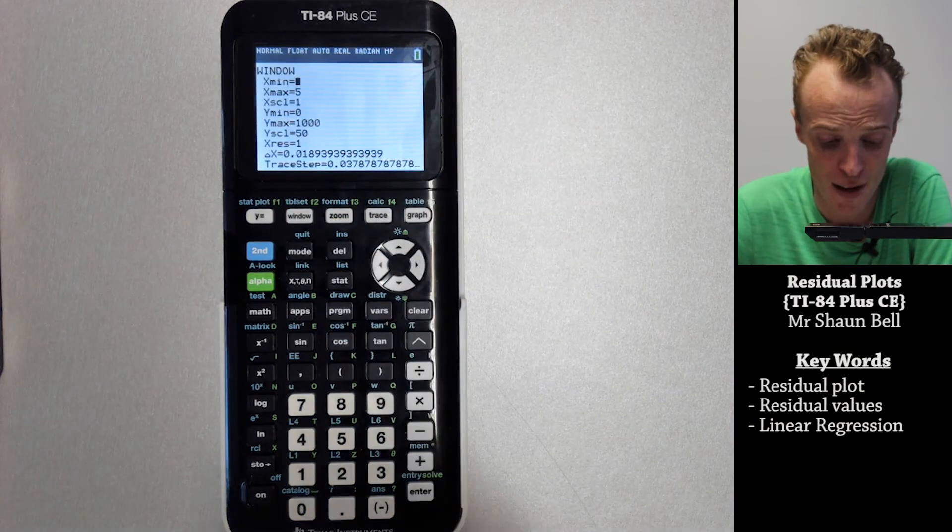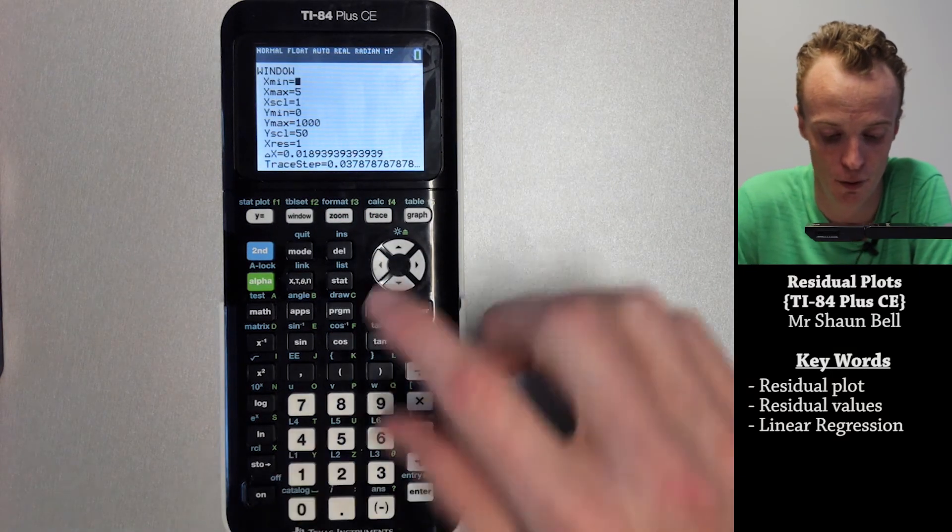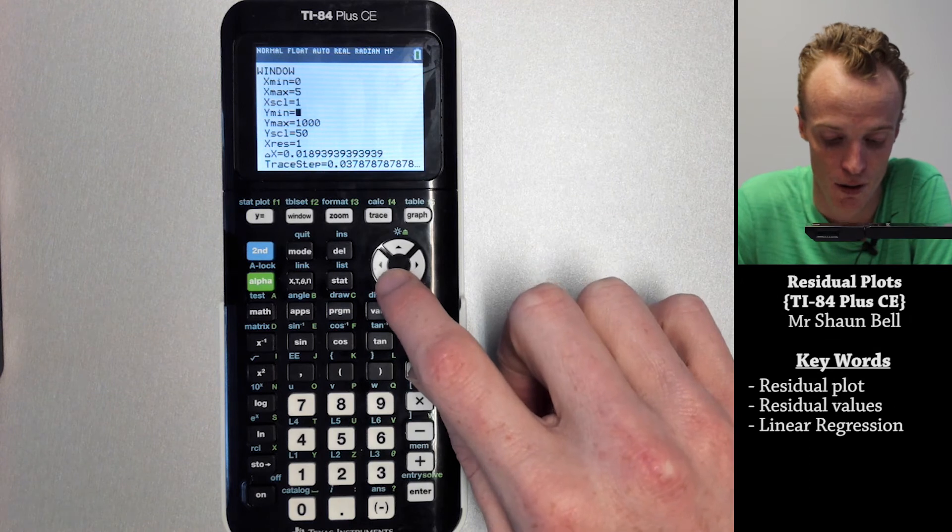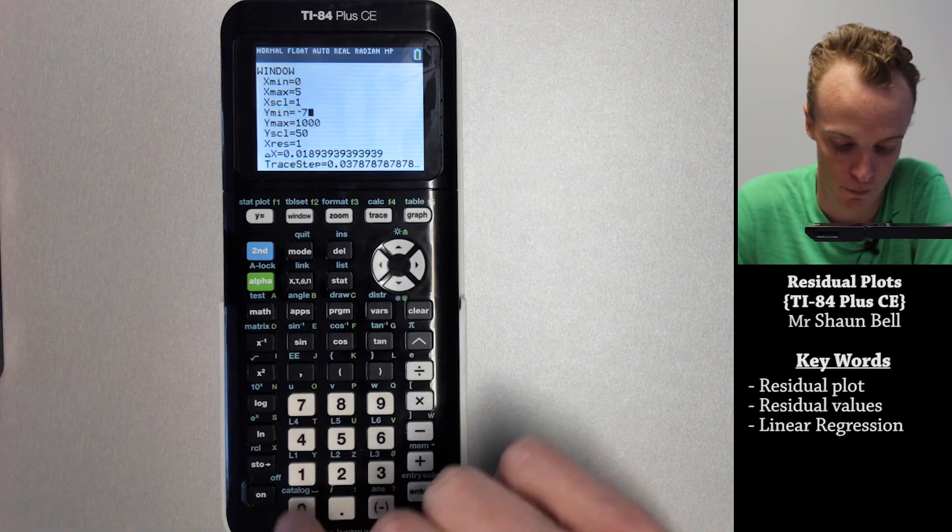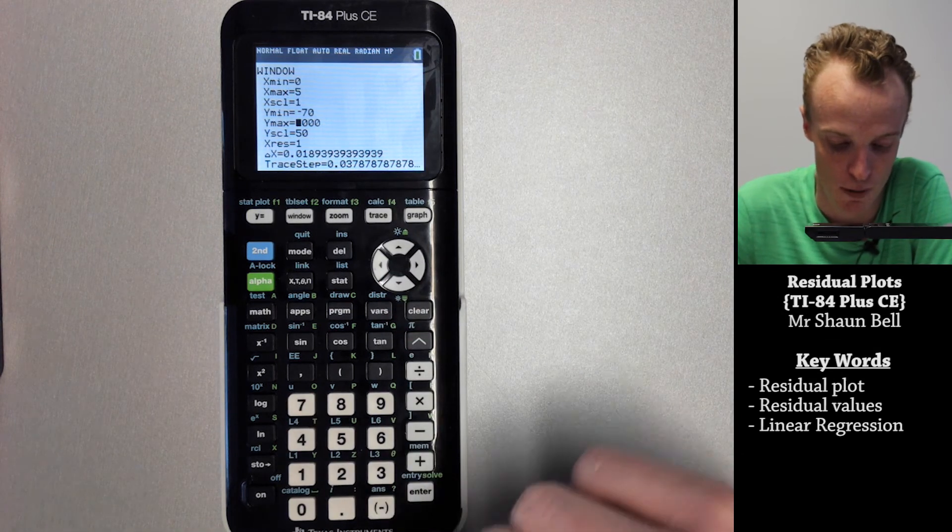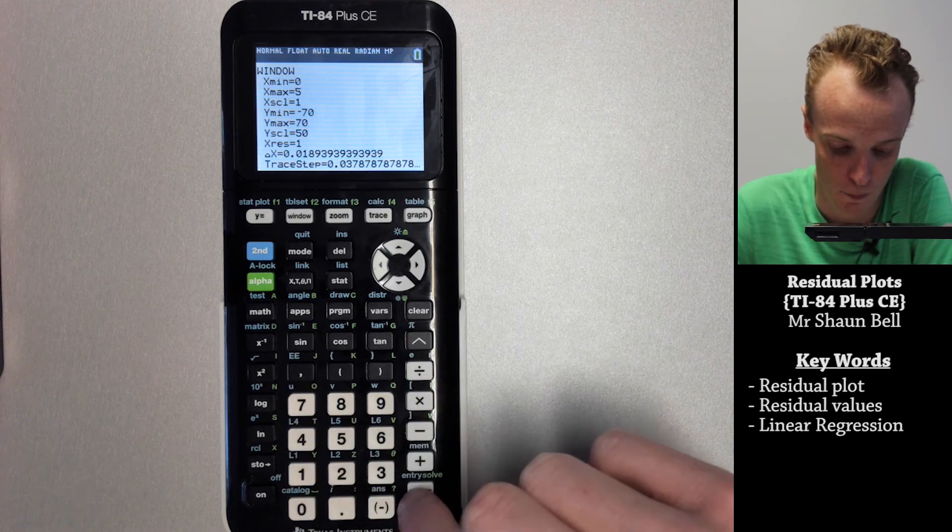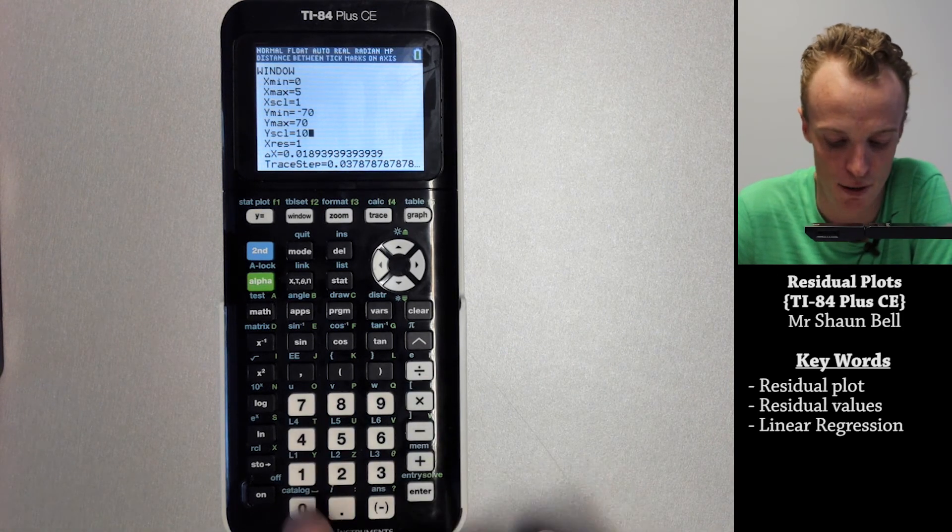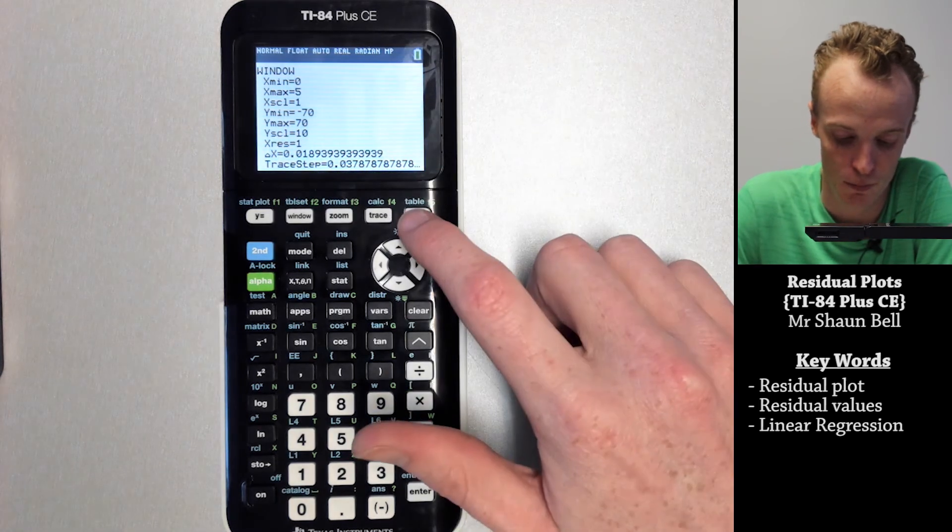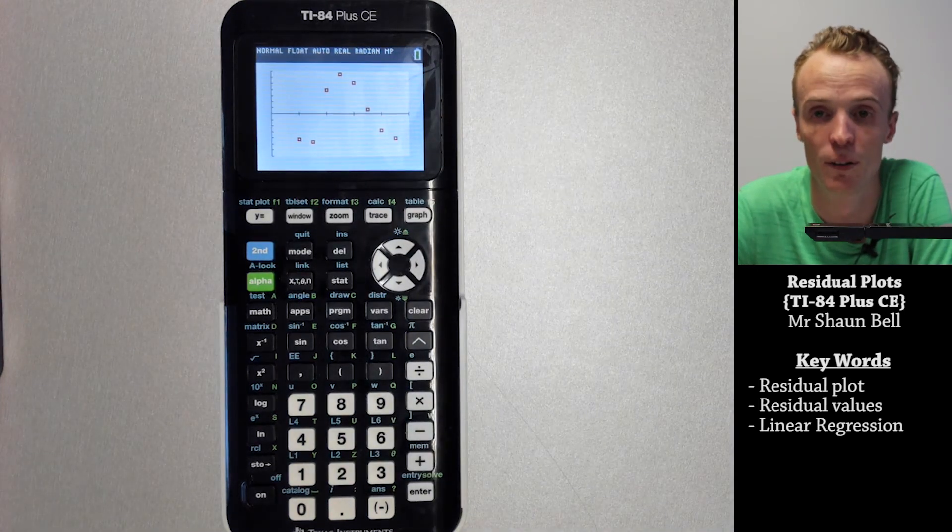To change my window I go to window. My x values are still fine, so let's change my y values now to negative 70 as my minimum, my maximum of 70, and for a scale I'm going to use 10. So let's graph that and have a look at what it looks like.